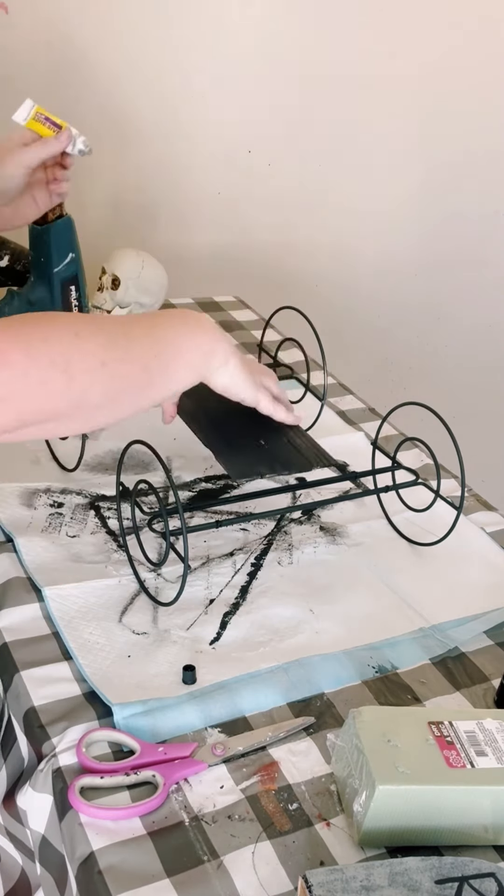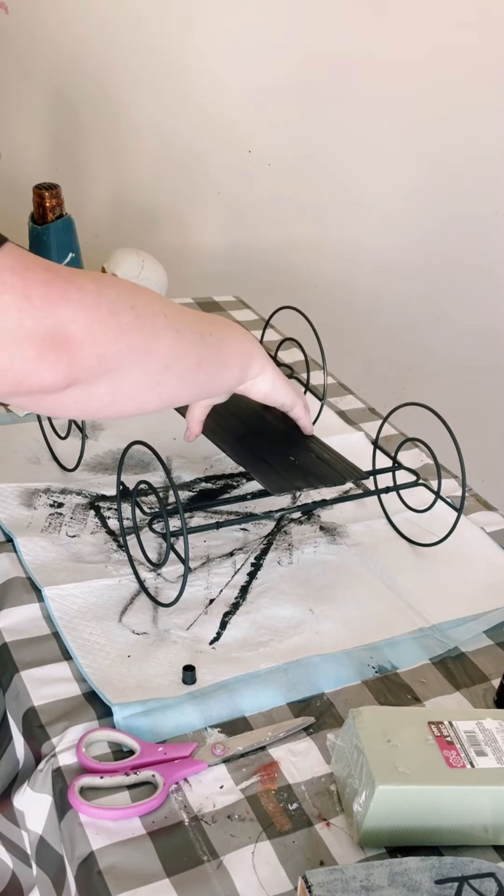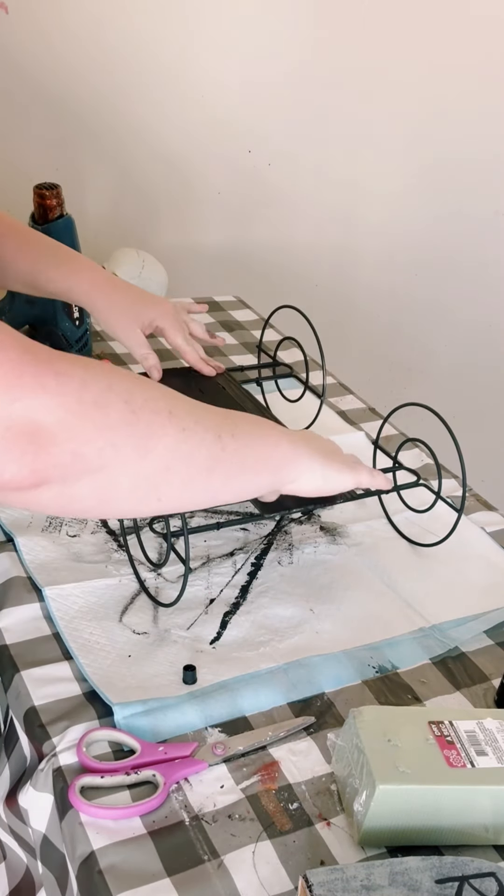Then glue that sign on the paper towel holders using E6000 and some hot glue, and allow those glues to dry for about five minutes.